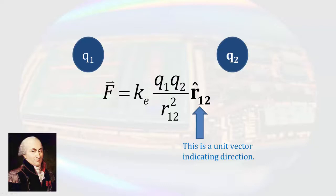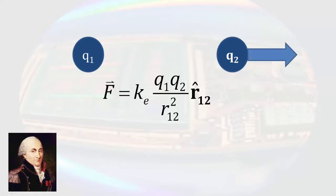If the charges are of the same type, for example both positive, the force will be repulsive and q2 will have a force that will move it to the right. If the charges are opposite charges, the force on q2 would move it to the left.